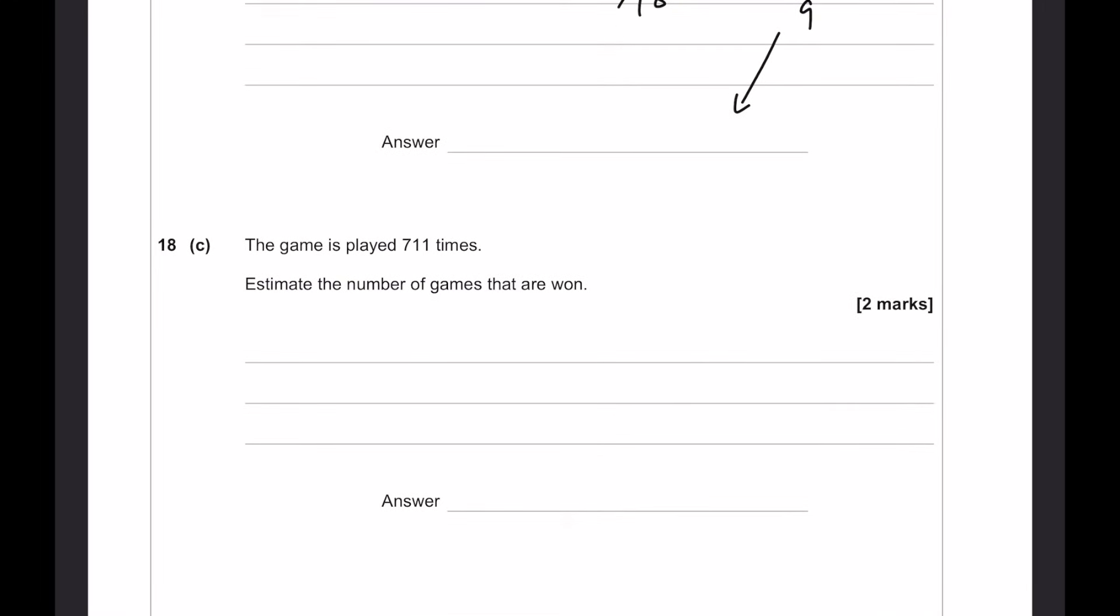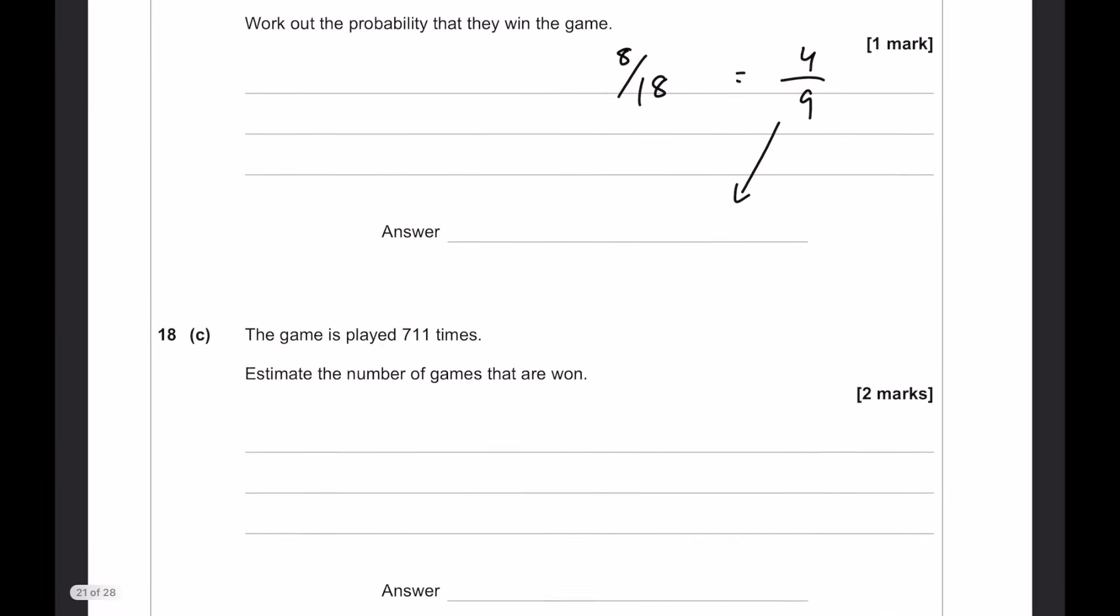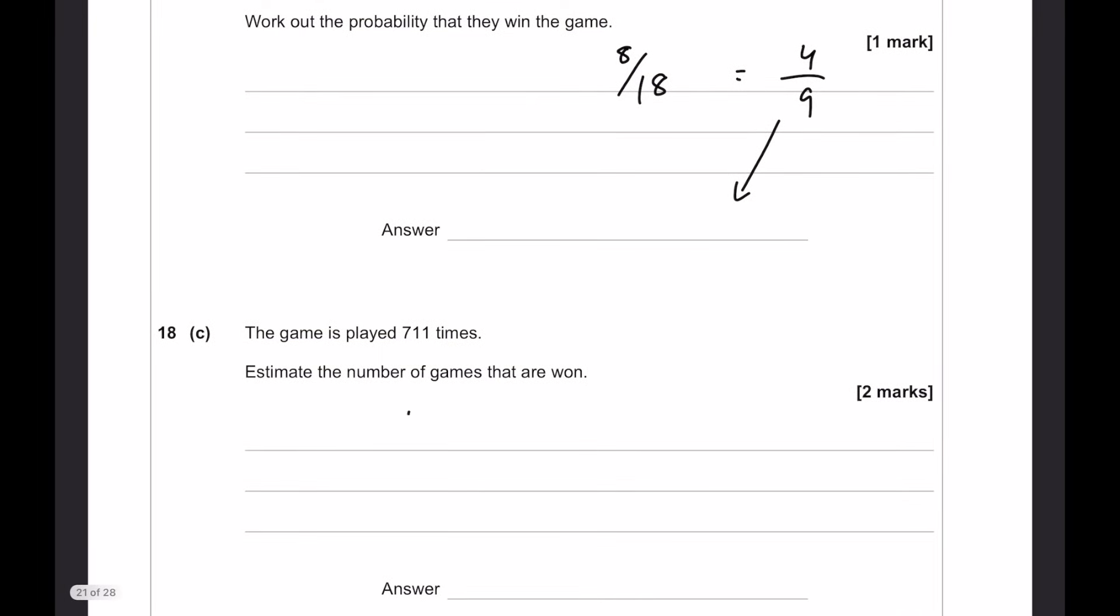The game is played 711 times. Estimate the number of games that are won. So, if you play 711 times, effectively, what we want to do, 4 over 9. We want to compare that to if you play 711 times. Just to put into context what this means, for every 9 games you play, 4 of them will be won. So, if we do 711 divided by 9, it's going to tell us what we need to multiply the 4 by to match the same thing. Because whatever you do to the bottom, you have to do to the top. That number is 79. So, if we multiply that by 4, our top number is going to be 316 times.